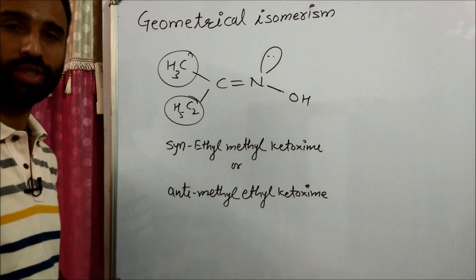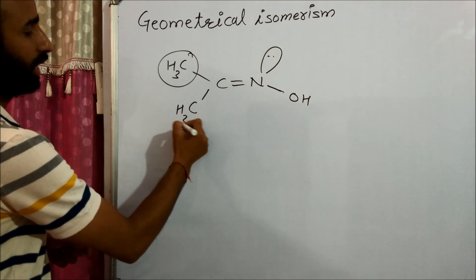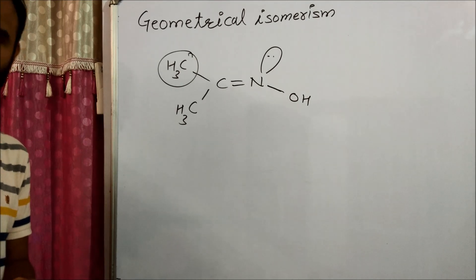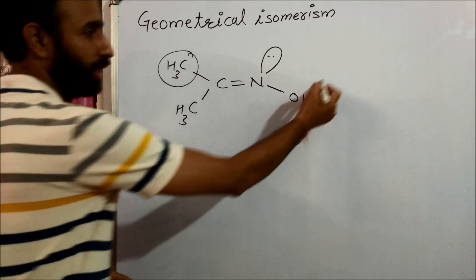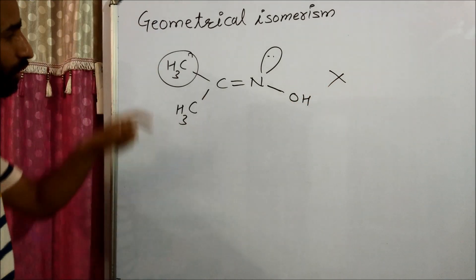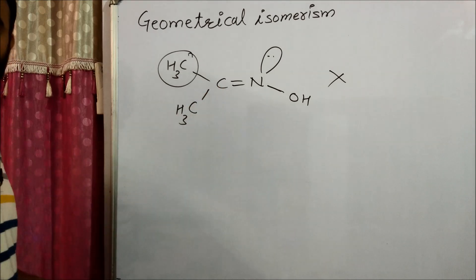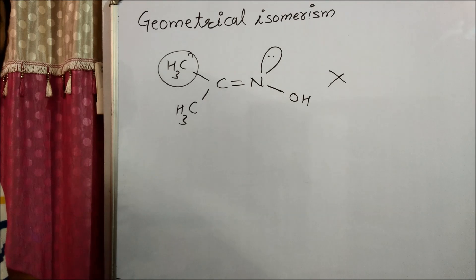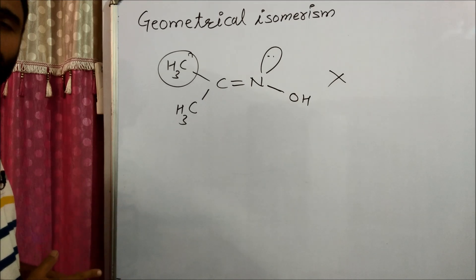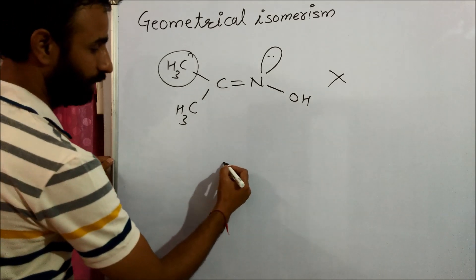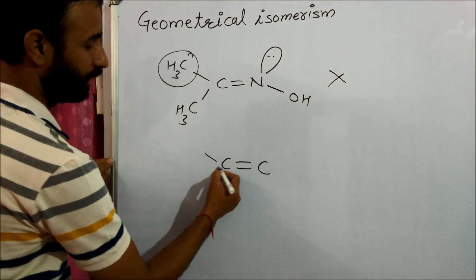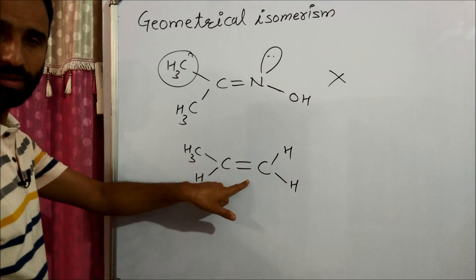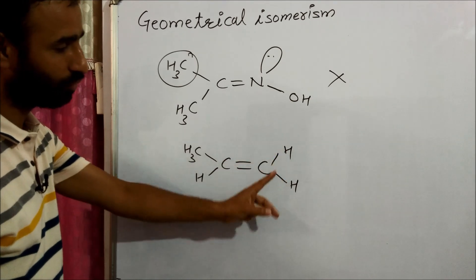If both alkyl groups are the same (e.g., both methyl), geometrical isomerism is not possible, because the carbon attached to the frozen bond is not attached to two different atoms or groups. The same applies to propene — there is a double bond, but two atoms attached on one side are the same, so it cannot show geometrical isomerism.